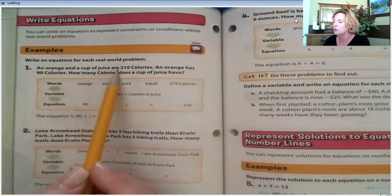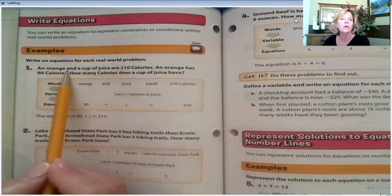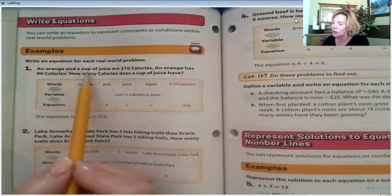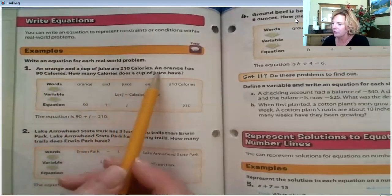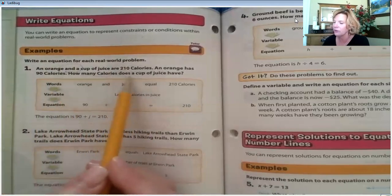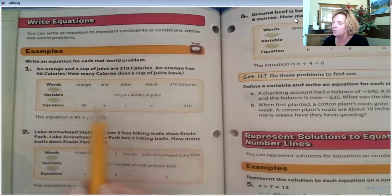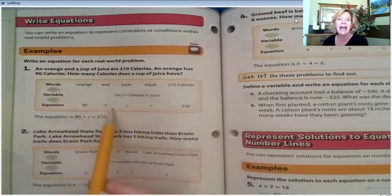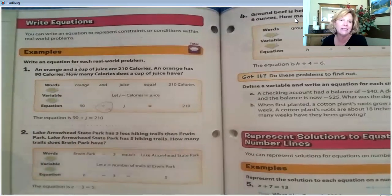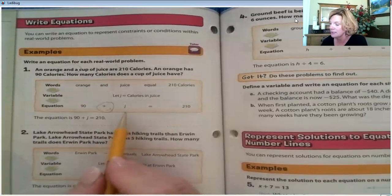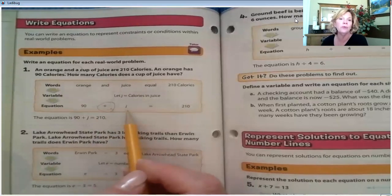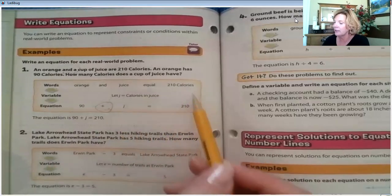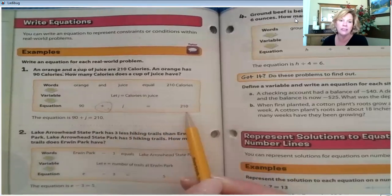An orange and a cup of juice are 210 calories. Okay. And that's a key word. An orange and a cup of juice are 210 calories. An orange has 90 calories. How many calories does a cup of juice have? So, this has been done for us. The orange has 90 calories. And so, we could put and in that list of words on the previous page. And the juice. We don't know how much the juice has. But they are, together, they are equal to 210 calories.